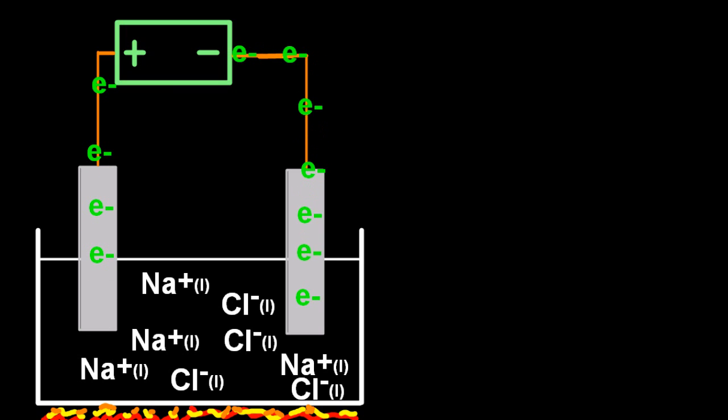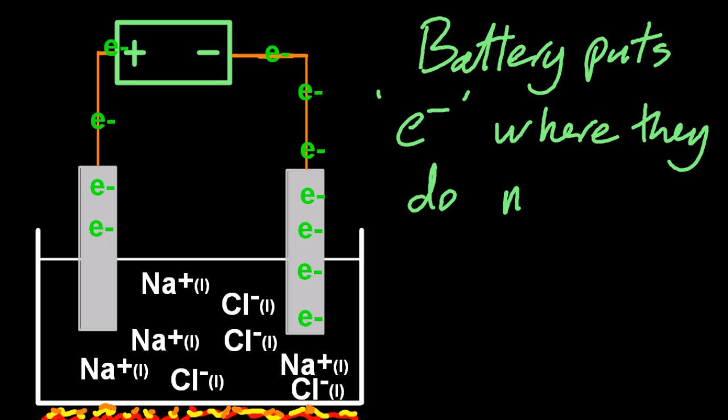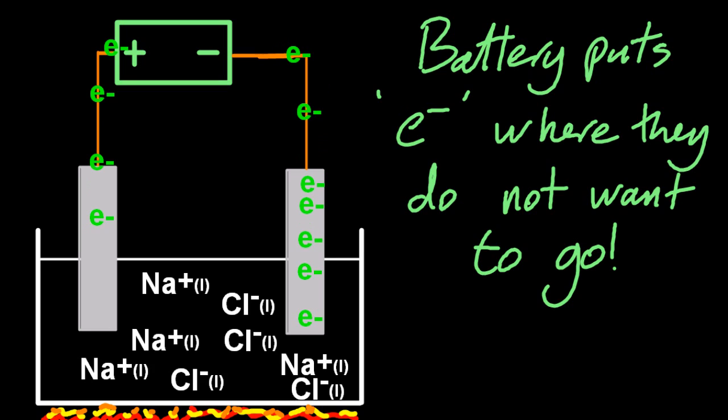Now, notice how after I've closed the switch, which was the second problem, the electrons are shuffling towards the negative electrode. Now, that seems odd. Electrons don't want to go to where something negative is. They repel, but a battery puts the electrons where they don't want to go. So the battery is pushing the electrons and piling them up on the negative electrode. Normally they wouldn't want to go there, but the battery forces them to go there.